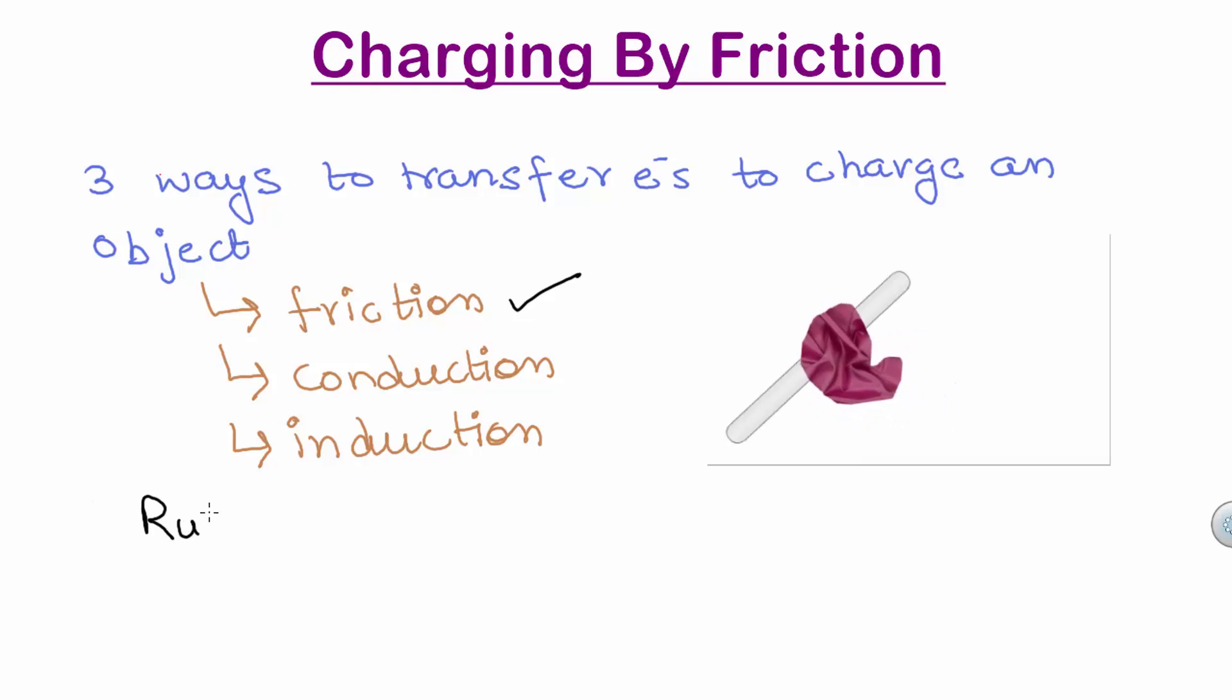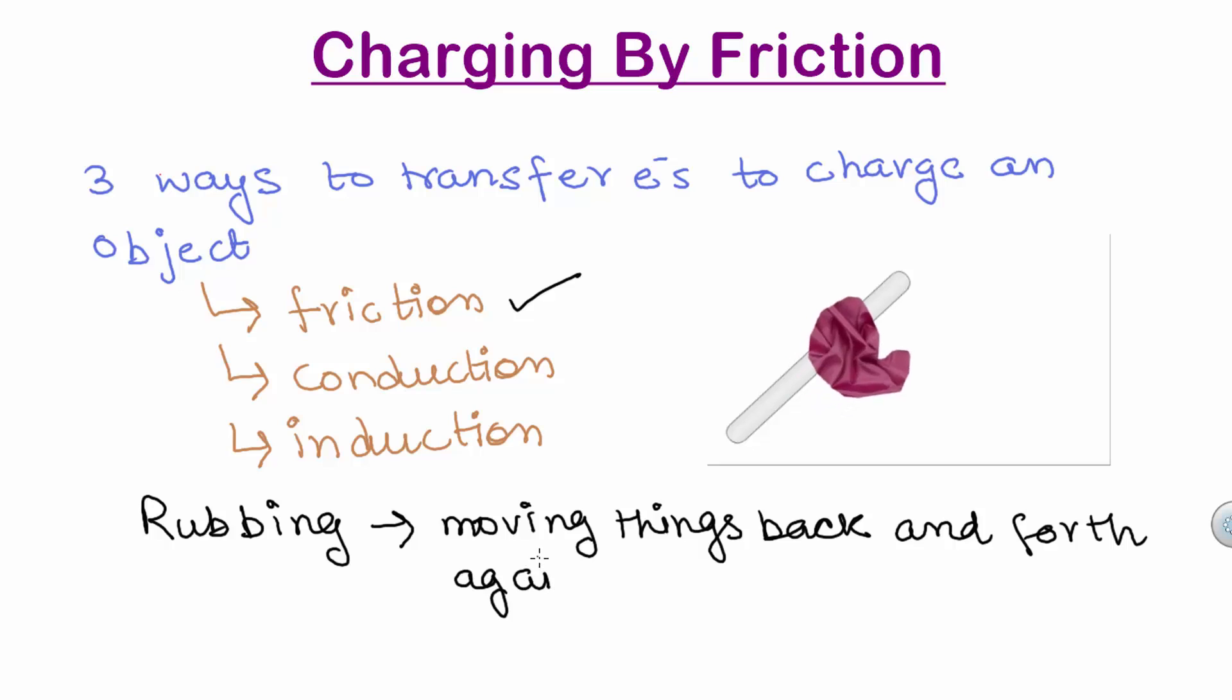Rubbing, as the term suggests, is moving two things back and forth against each other. The simplest way to experience electric charge is to rub certain bodies among each other. This rubbing or friction makes electrons move.